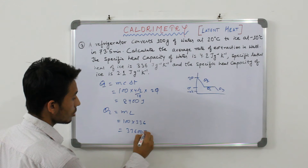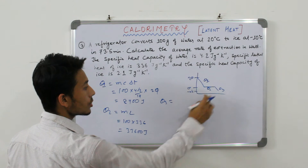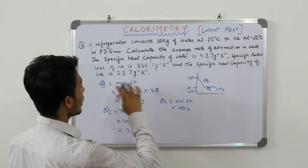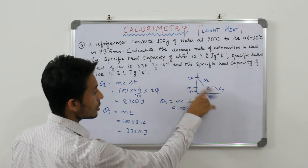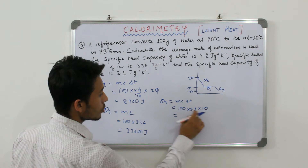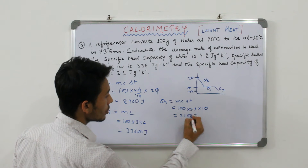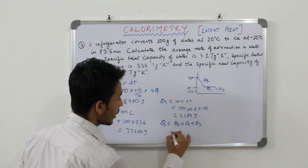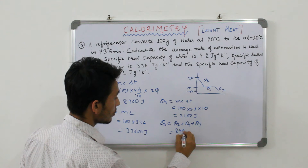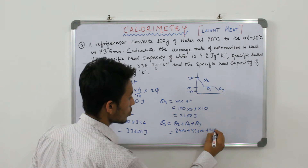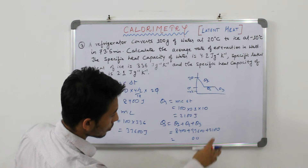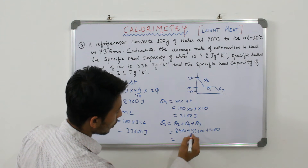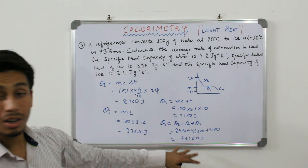For the third part, the temperature of ice drops, so Q3 = MC delta T = 100 × 2.1 × 10 = 2100 joule. We add up to get total heat: Q = Q1 + Q2 + Q3 = 8400 + 33600 + 2100 = 44100 joule. This is the total amount of heat that will be extracted.